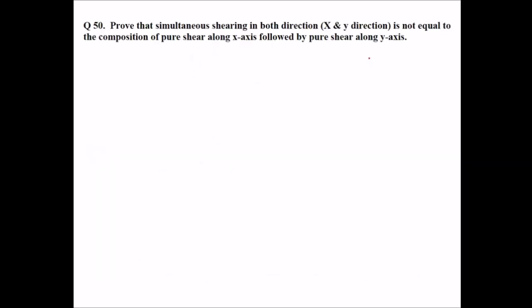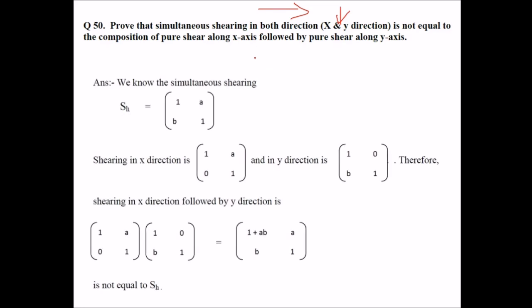Now prove that simultaneous shearing in both directions, that is x and y direction, is not equal to the composition of pure shear along x axis followed by pure shear along y axis. So we know that simultaneous shearing is given by like this. But if we remove b, this will be in x direction. If we remove a, means replace it by 0, this will be in y direction.